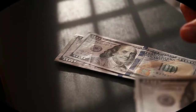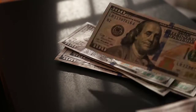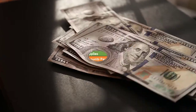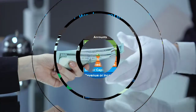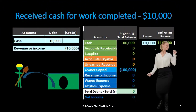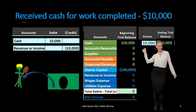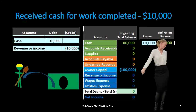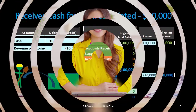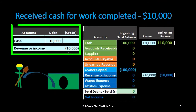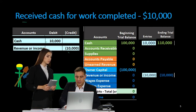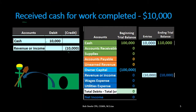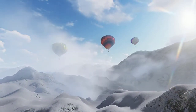We now know we're going to credit something for 10,000 and just need to know what that credit goes to. We have done work, meaning we have earned revenue. People paid us cash at the same point in time the work was completed, so revenue is recognized under the revenue recognition principle because we completed the work. Posting that out: 10,000 increasing in the credit direction.